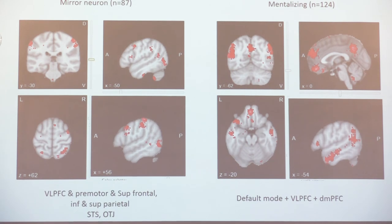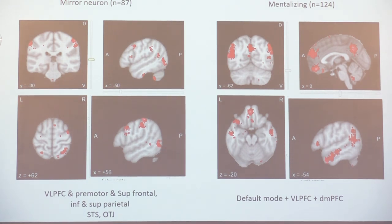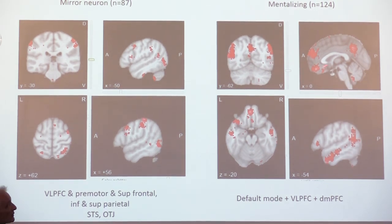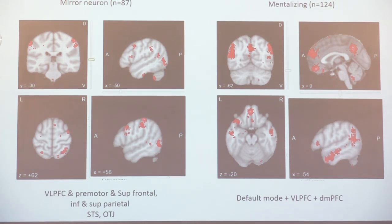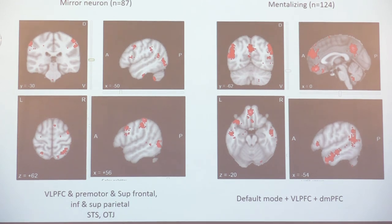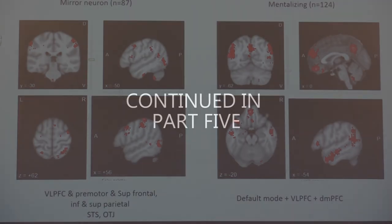The mirror-neuron network is pre-conscious and reflexive, whereas mentalizing is your interpretation of what your mirror neurons pick up and mimic. The mentalizing network is nothing other than your default mode network being active. So your default mode network is basically what allows you to mentalize — to think about what others have as ideas, feelings, and to understand their behaviors and intentions.